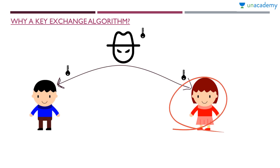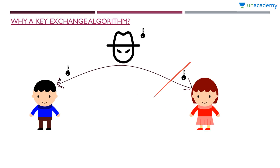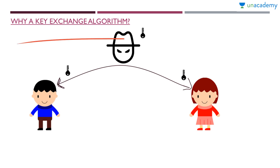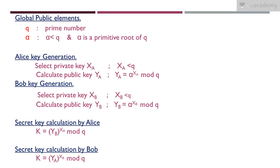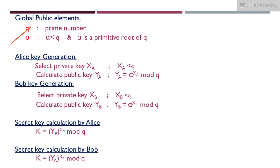That's why we need this kind of algorithm — to make a secure key exchange between two authorized parties. This algorithm is just used for key exchange. In other algorithms like RSA, it can be used for encryption, decryption, digital signature, key exchange, etc. But Diffie-Hellman is specifically for key exchange and can be used alongside other algorithms.